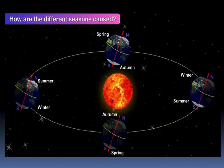Let's learn about how different seasons are caused. Different seasons like spring, autumn, summer and winter are caused by the revolution of earth around the sun.